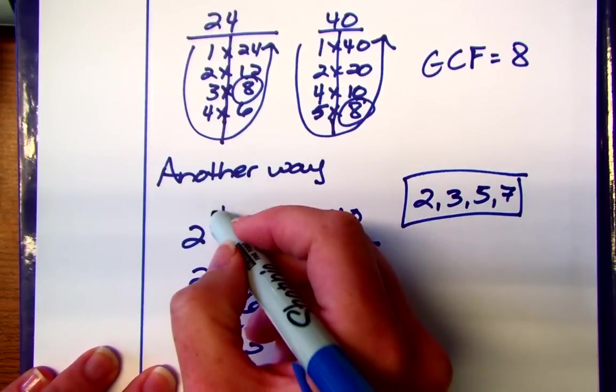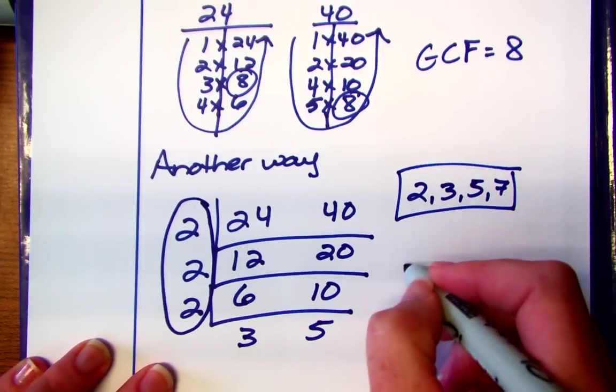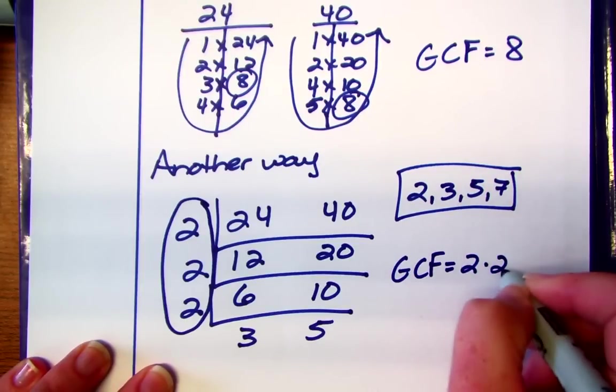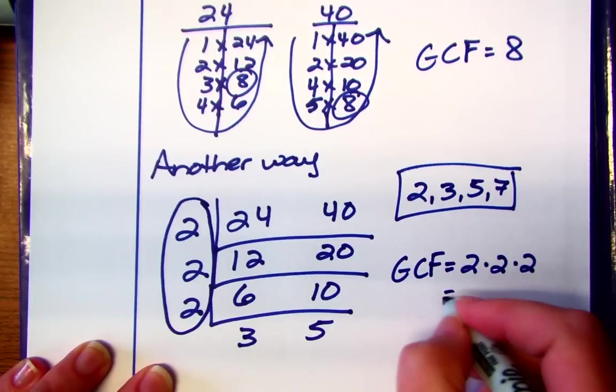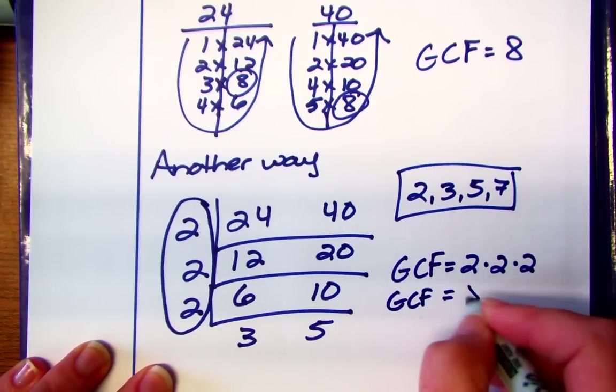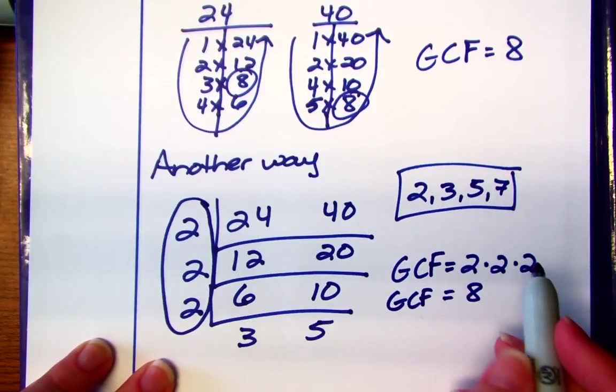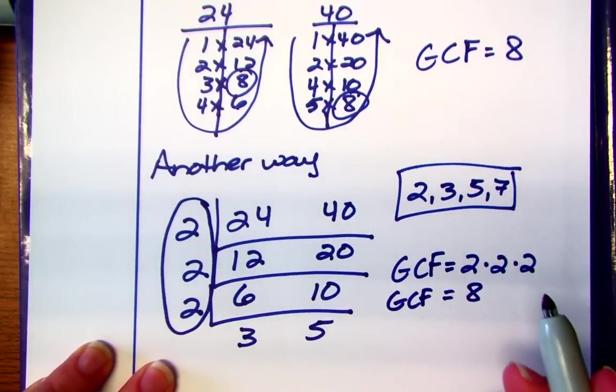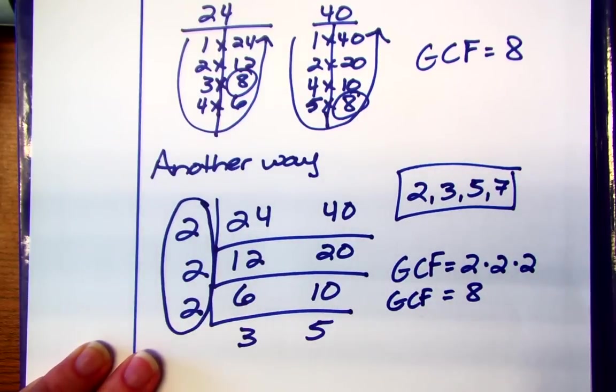So what you need to do is off to the side you circle those numbers and then you multiply. Our greatest common factor is going to be 2 times 2 times 2. 2 times 2 is 4, 4 times 2 is 8. So our greatest common factor is 8. So again notice it's the same answer. It should be the same answer. But it's just a different way to solve the problem. And a lot of people like this birthday cake way or this reverse division way.